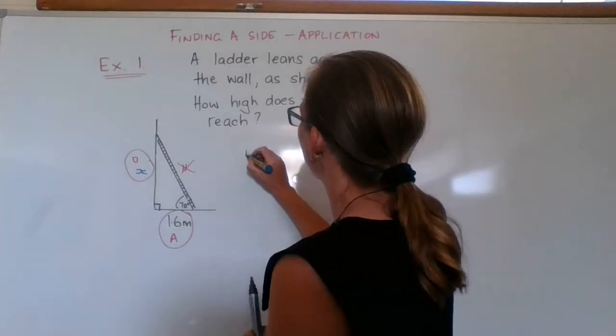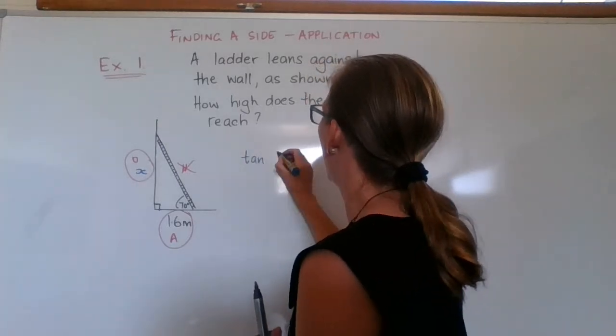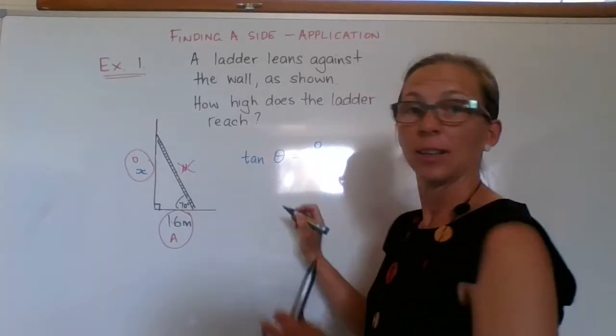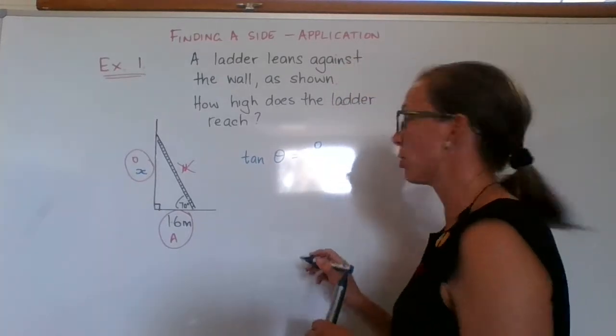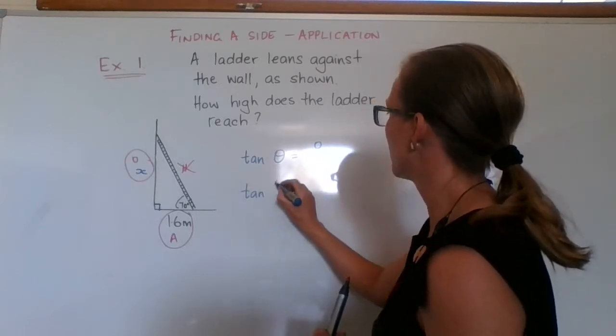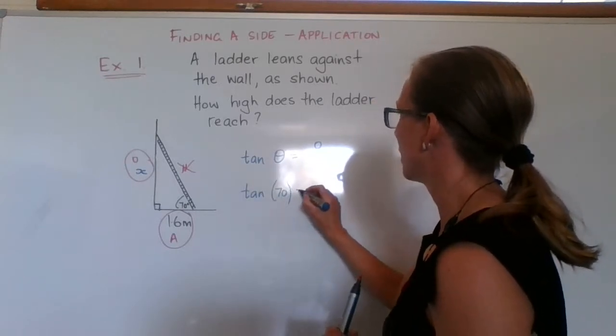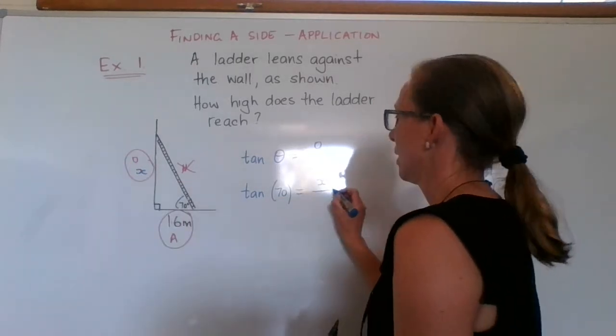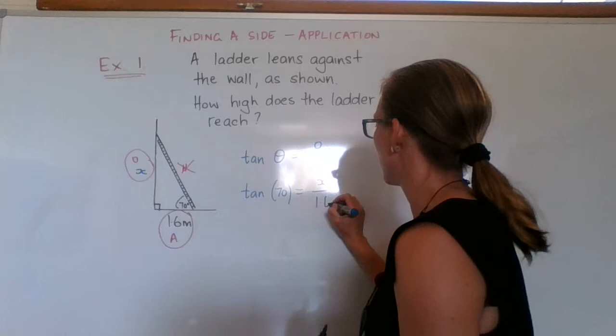So tan theta equals opposite on adjacent. Once we've written our formula, we substitute in, so tan of 70 is equal to opposite, we replace with an x, adjacent, we replace by 1.6.